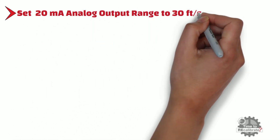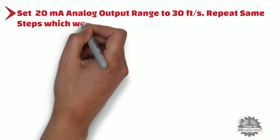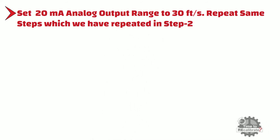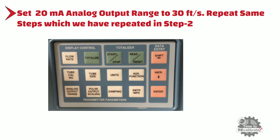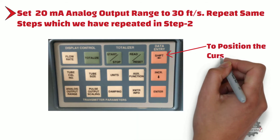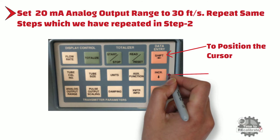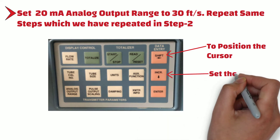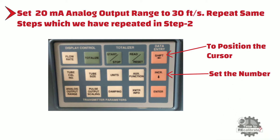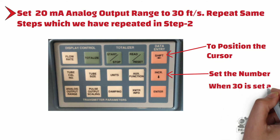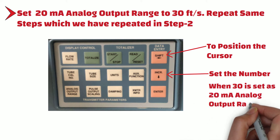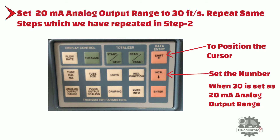Step 3: Set the 20mA analog output range to 30 feet per second. Repeat the same steps as in Step 2. Press the analog output range button — the current analog output range will display. Press the shift button to position the cursor to the digit that needs to be set, then press the increment button to set the number. Repeat until 30 is set, then press enter to store this value in the transmitter.